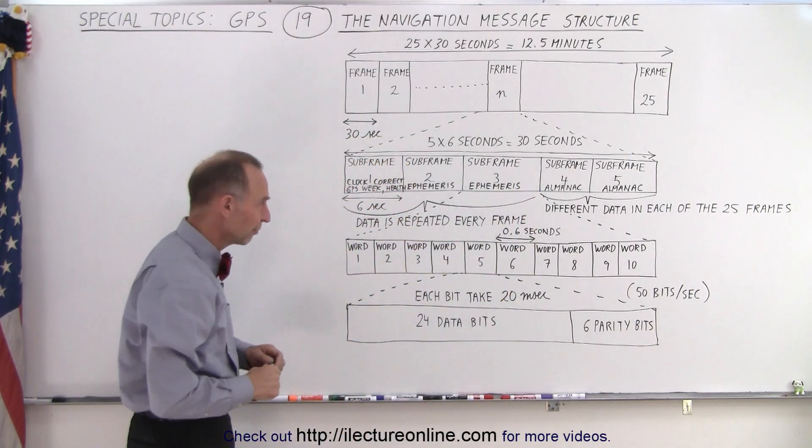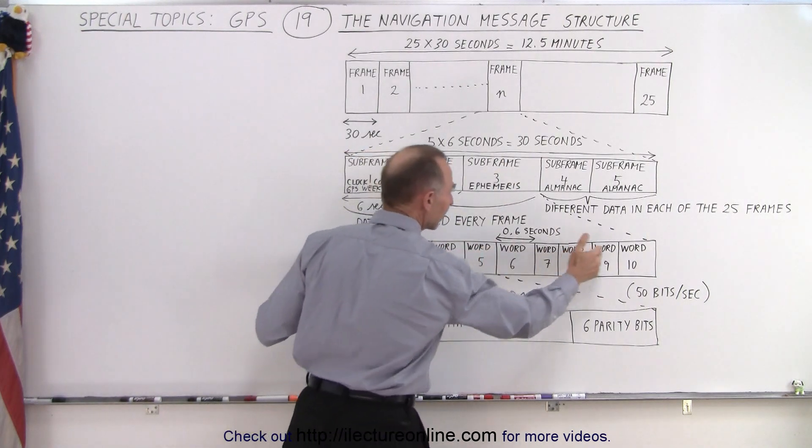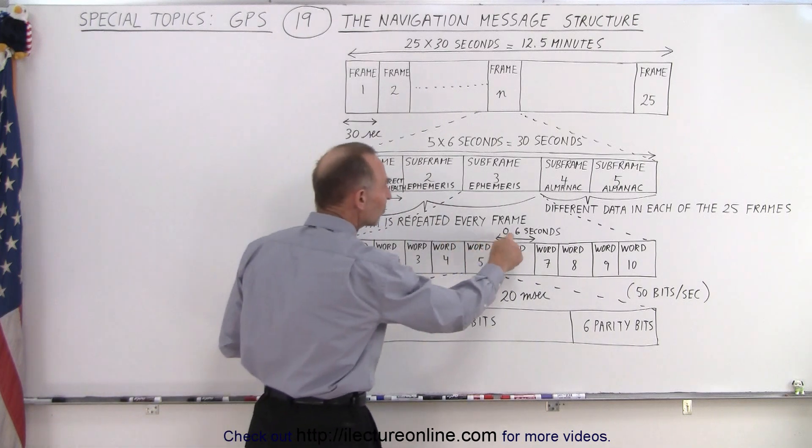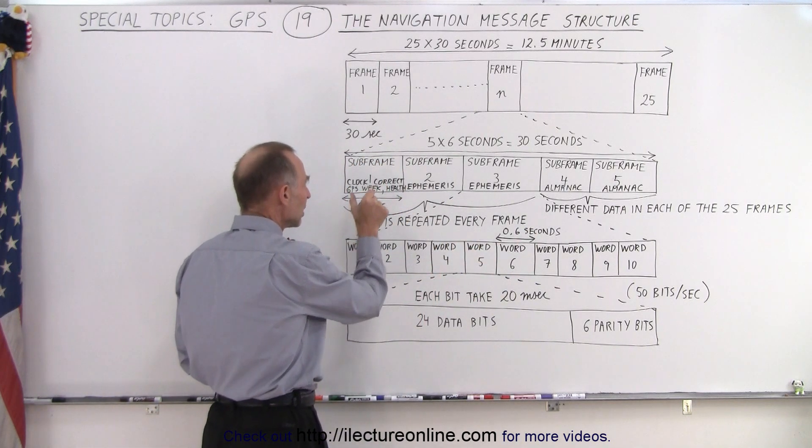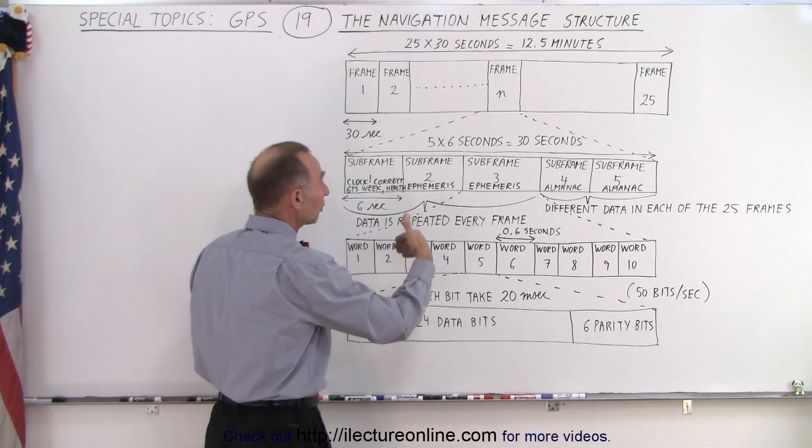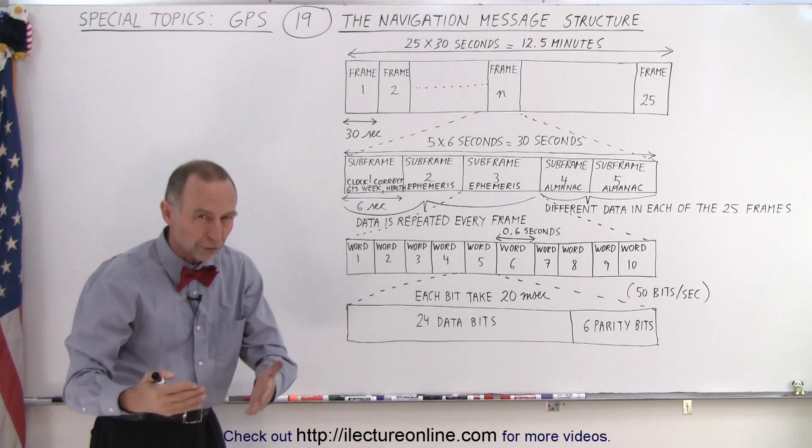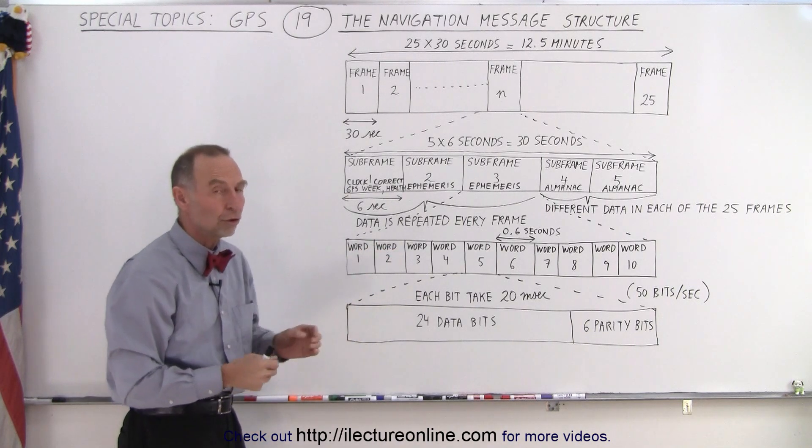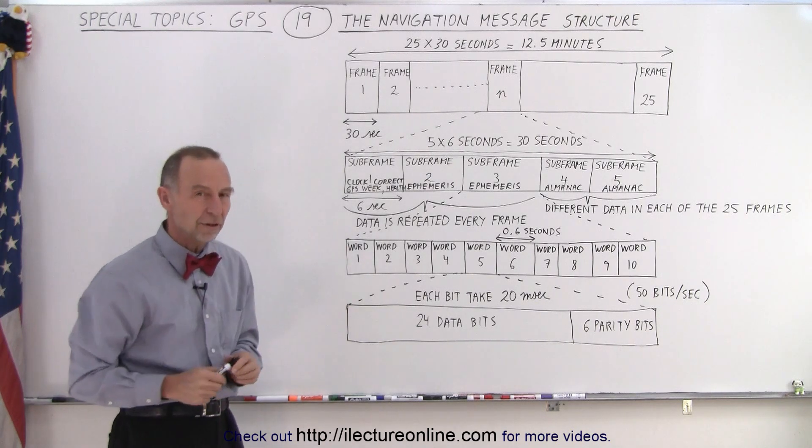Then if we drill a little bit further down, if you look at a single subframe, we then realize that they contain 10 words, each of the words takes 0.6 seconds to be sent. Now, of course, what's contained in each word will depend a lot upon which subframe we're talking about. So when we talk about more of the details in the next so many videos, we'll go ahead and show you how the words themselves are broken down to contain specific information.